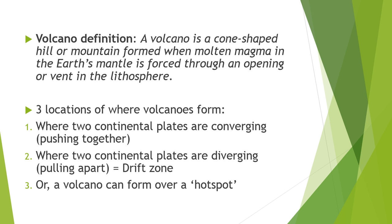We've got three locations of where volcanoes form on this Earth. First, where two continental plates are converging, pushing together. Second, where two plates are diverging, pulling apart, which also causes a rift zone that we'll look at a little bit later on. Third, a volcano can form over a hotspot, which we're also going to be looking at today. I'd make a list of those three in your exercise book.